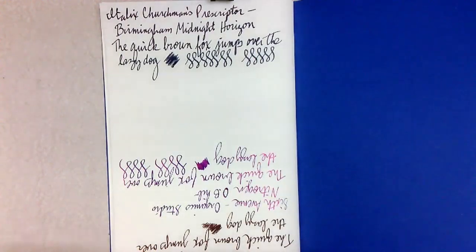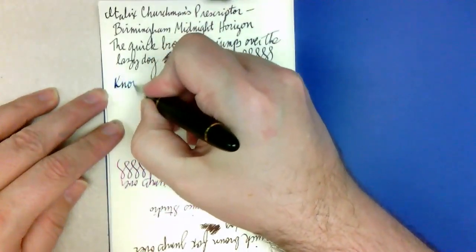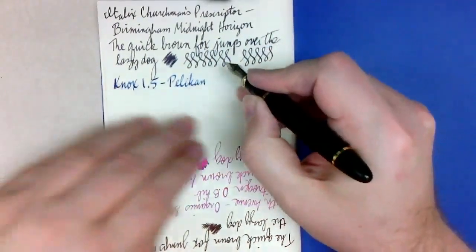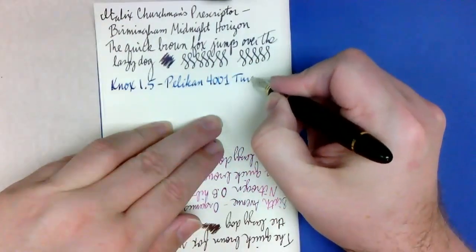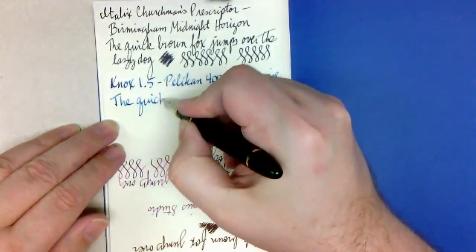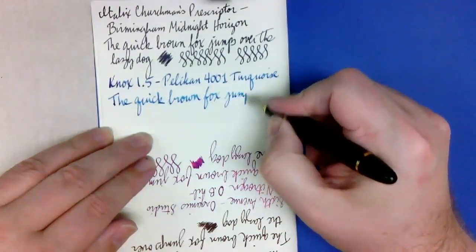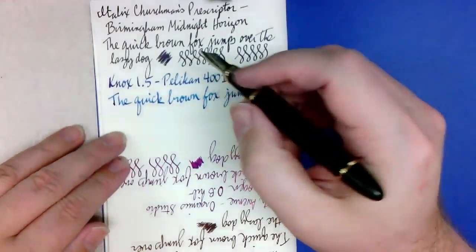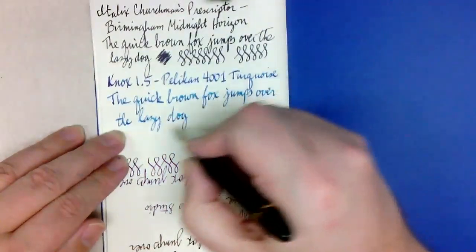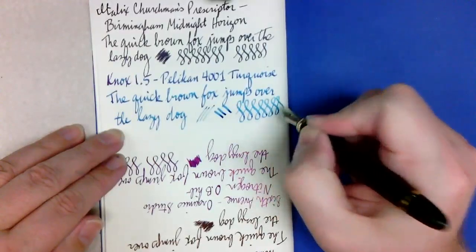All right, and then just for the final comparison, this is that Knox 1.5. Technically it's on a Jinhao X450, but I'm just going to write Knox 1.5. And this is actually Pelikan 4001 Turquoise. Again, this is a much broader thing, and therefore you get a much different thing.